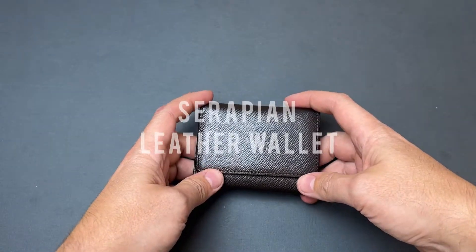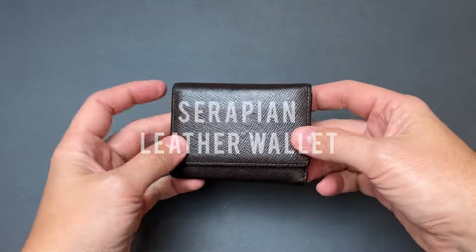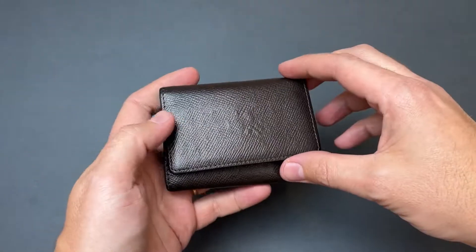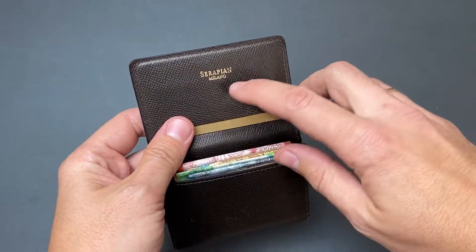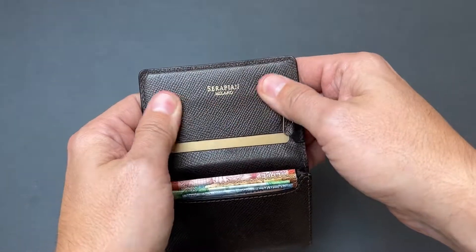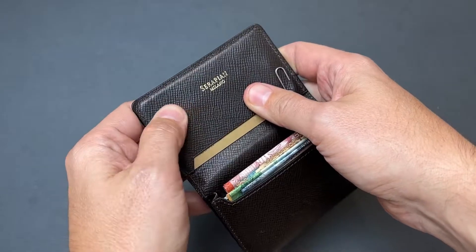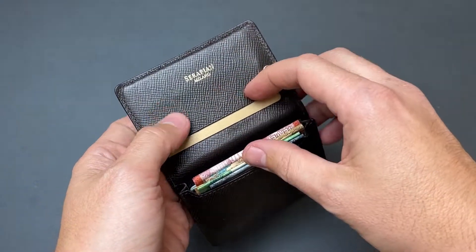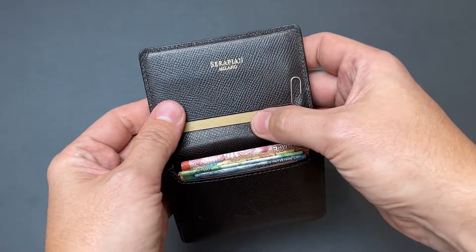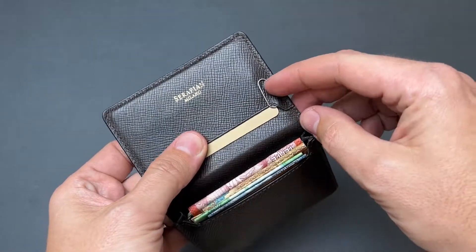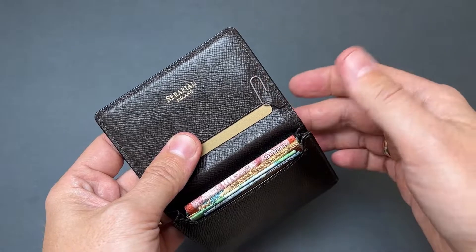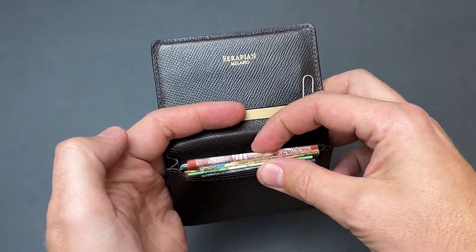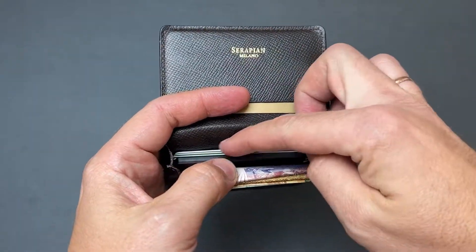The next thing in my pocket of course is a wallet. This is a leather wallet from a premium brand from Milan, Serapian Milano. It has full grain leather, very stiff. It has some compartments for my main card here. I have a pin to open the SIM slots on iPhone, some small amount of cash, and some cards.